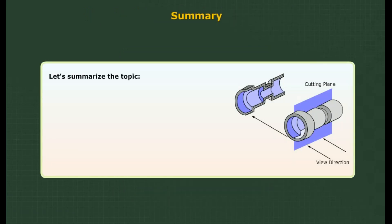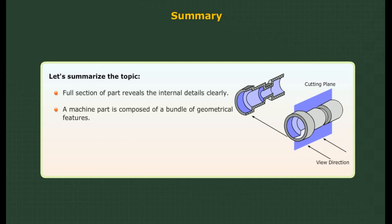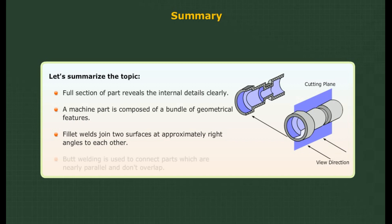Summary: Full section of a part reveals the internal details clearly. The machine part is composed of a bundle of geometrical features. Fillet welds join two surfaces at approximately right angles to each other. Butt welding is used to connect parts which are nearly parallel and do not overlap.